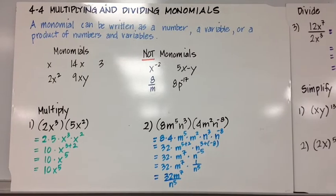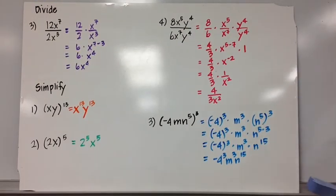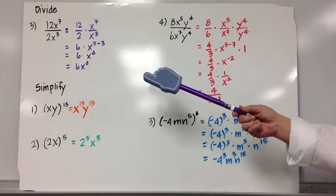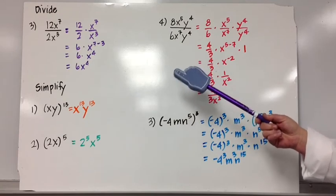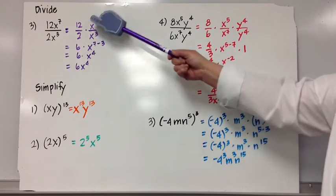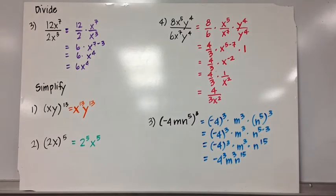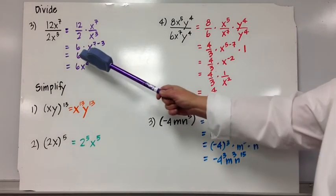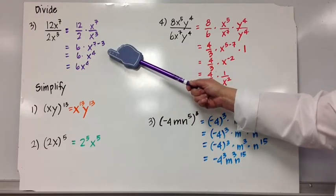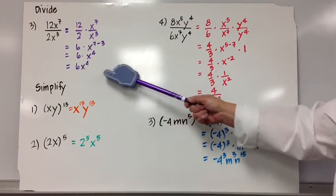Now let's do some division. Let's divide 12x to the 7th by 2x cubed. I'm going to break this up into constants and like bases: 12 over 2 and x to the 7th over x cubed. 12 divided by 2 is 6, and x to the 7th divided by x cubed is x to the 7 minus 3, which results in 6x to the 4th.